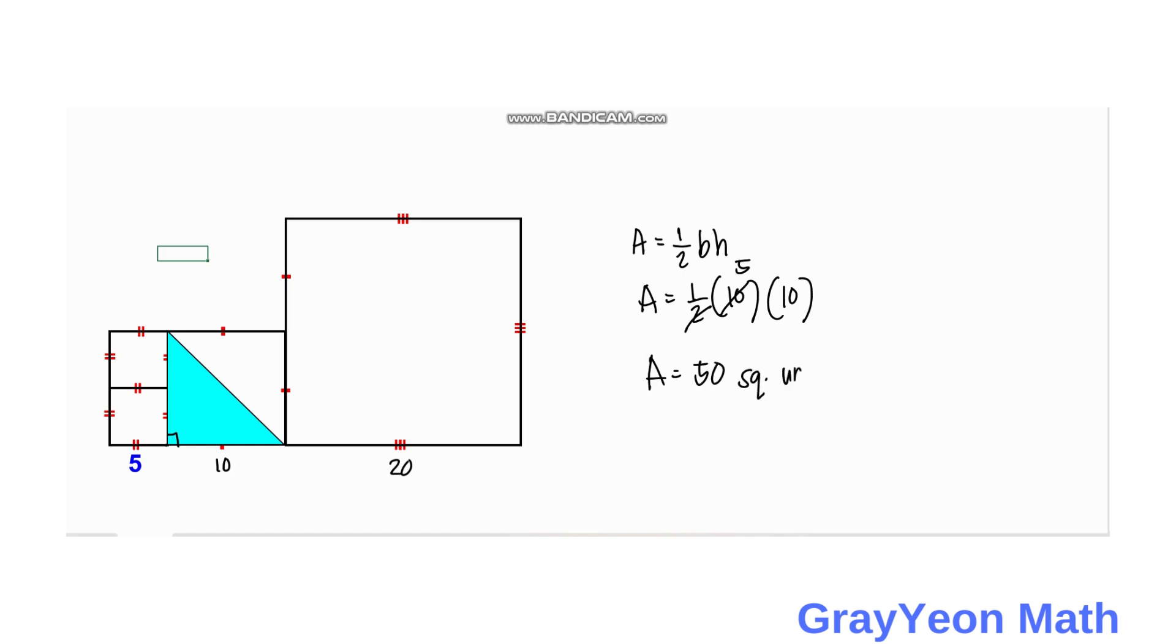This is our answer for method one. For the second method, we are going to divide the triangle into two parts, so we divide it by this way. We draw a line here.